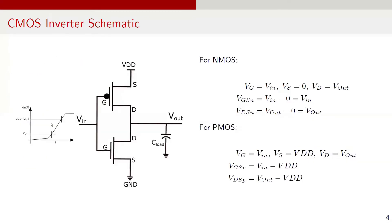Now let's move on to CMOS inverter. A CMOS inverter consists of two transistors: a PMOS and an NMOS. The gate terminals of PMOS and NMOS are connected together, and this is input node VIN. The drain terminals of both PMOS and NMOS are connected with each other, forming the output node Vout. The source terminal of PMOS is connected to power supply VDD and the source terminal of NMOS is connected to ground, which is at 0V. Additionally, a load capacitor denoted as C-load is connected at the output terminal Vout. An input voltage VIN is applied to the gate terminal, which drives the inverter.